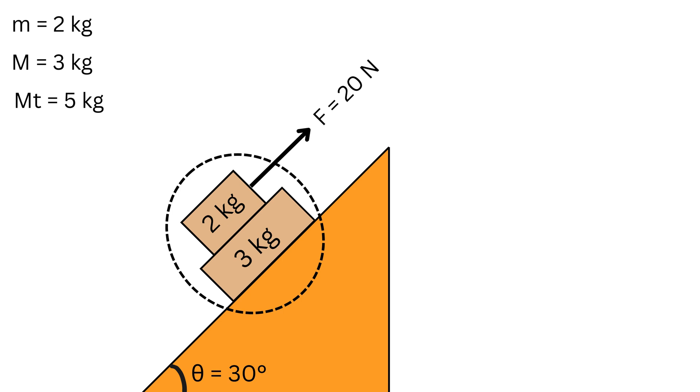Now, the forces acting along the incline are the applied force F, which acts up the incline and the downward pull or the total mass, 5 times g times the sine of 30 degrees. Substitute the values and you get 24.5 Newtons.